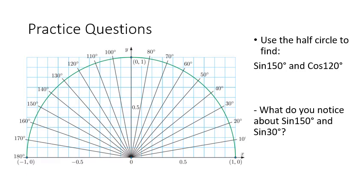Here are some more practice questions, this time with the unit half circle. Can you find sine 150 and the values of sine 150 and cosine 120? I'd also like you to just highlight what you notice about sine 150 and sine 30, because it's very important that we identify this. When you think you've got the answers to all of the practice questions, continue the video and we'll see how you went.